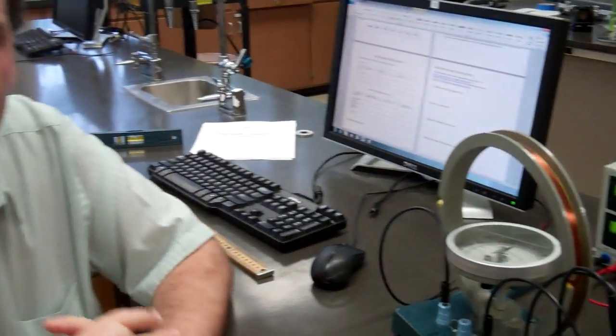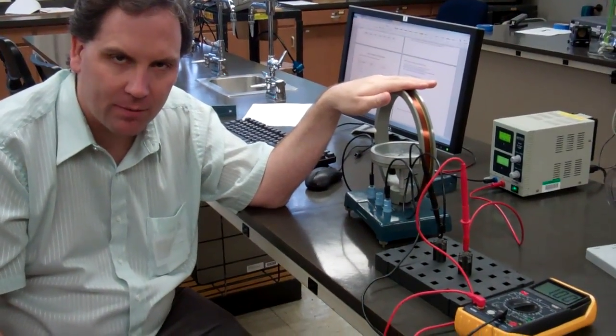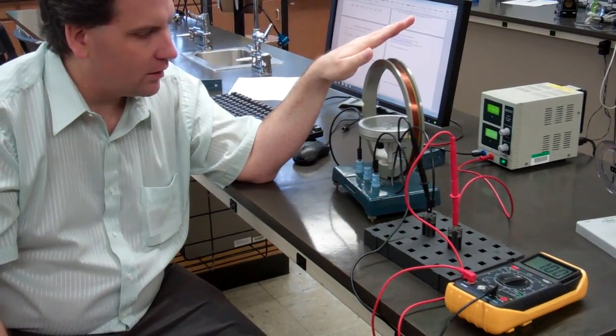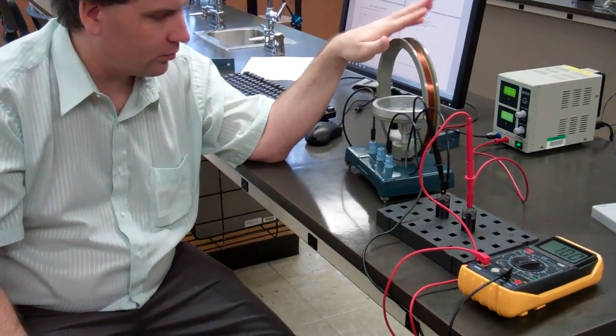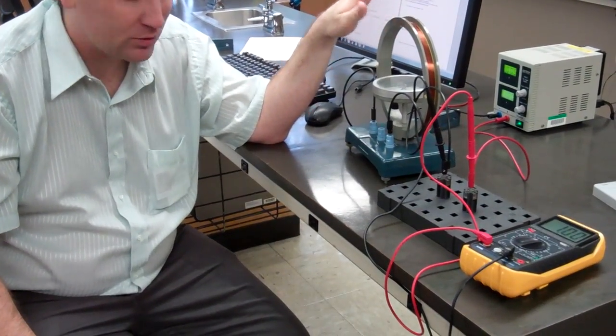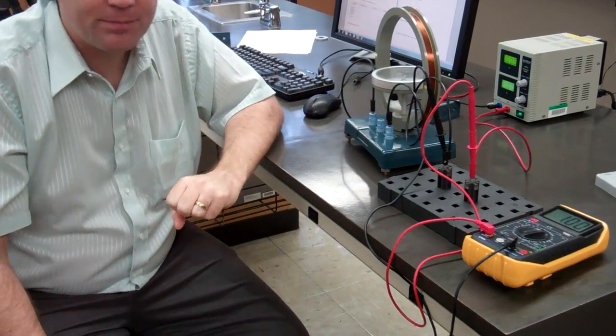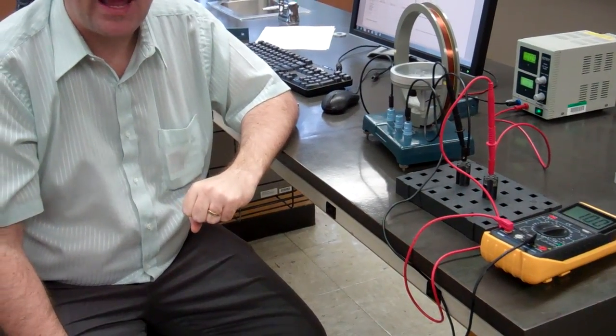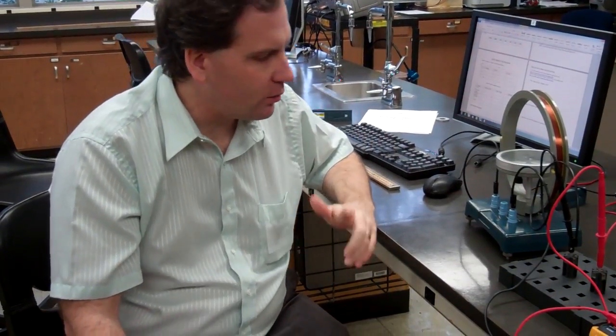So now we have to calculate our induced magnetic field. This is the magnetic field that's generated by the galvanometer. Now be careful not to move this. The formula is B equals mu zero times N, which is 15, times I, which is your current, divided by the radius. Well, how do we figure out the radius?